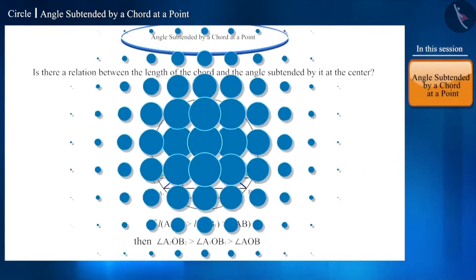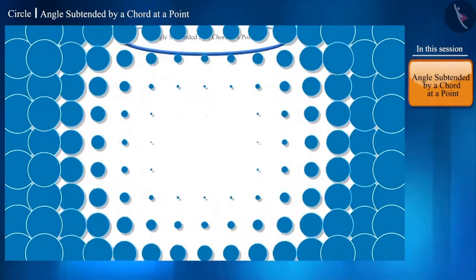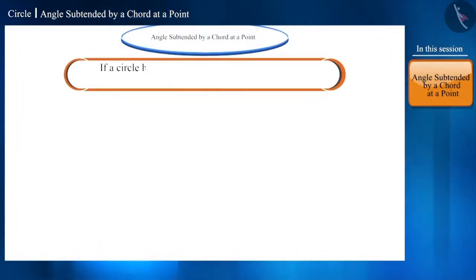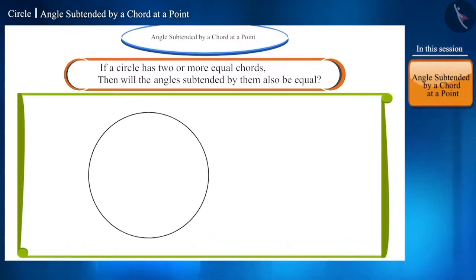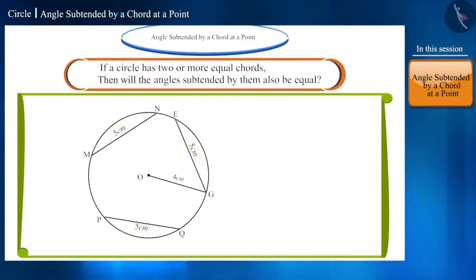Friends, let us discuss a question. If a circle has two or more equal chords, then will the angles subtended by them at the center also be equal? Let us find out. Draw a circle whose center is O and the radius is 4 cm. Now make three chords PQ, MN and GE which measure 5 cm, and join these points with the center O in this way.